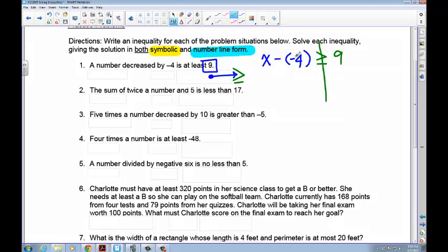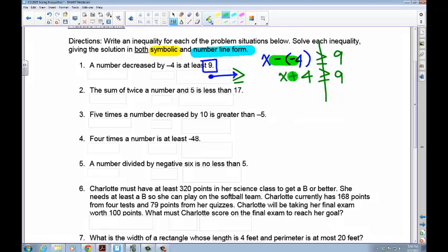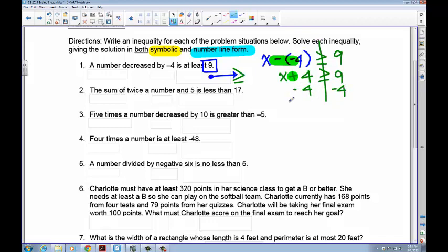When we solve we know a negative times a negative is a positive so it'll be x plus four is greater than or equal to nine. So just so that we're clear we know that these two turned into a positive. And when we solve for x from here we know we're going to subtract four from both sides and we're left with x is greater than or equal to five.